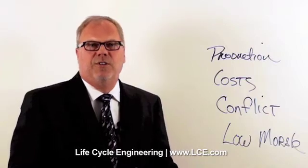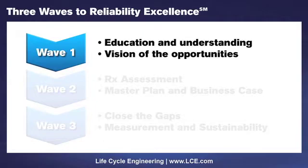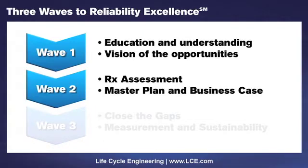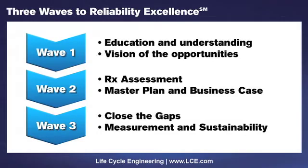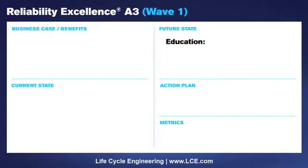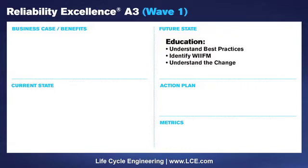So how would we fix it? What could help us achieve reliability excellence? Let's talk about how we can use an A3 and a three-wave approach to achieve reliability excellence. The first wave is about education — and I'll get into greater depth about that in a minute. The second wave is about assessing, and the third wave is about taking action to close those gaps. First, we need to determine what a future state looks like — how can we understand best practices around reliability, identify what's in it for me, understand the change, and understand how it affects me? One way to do that through education is creating awareness and desire, and we call that wave one.